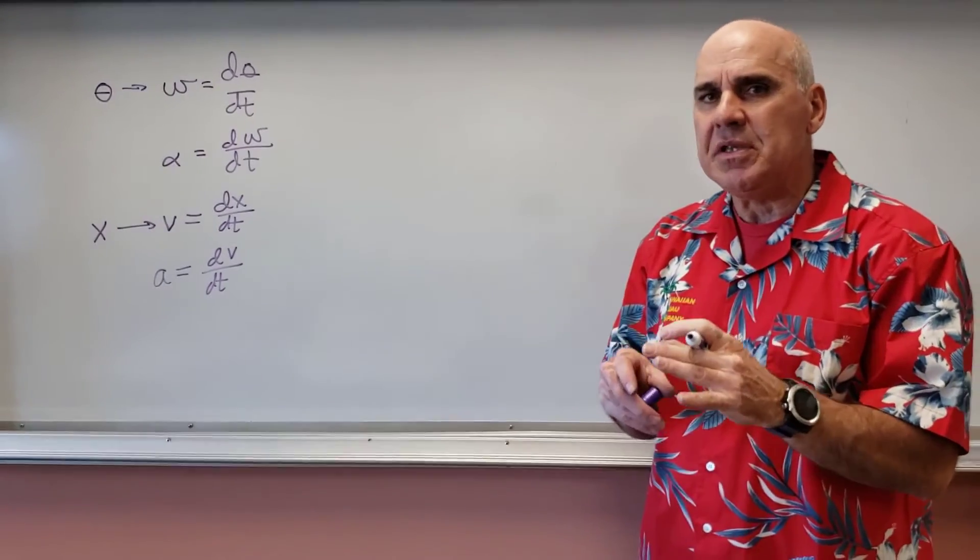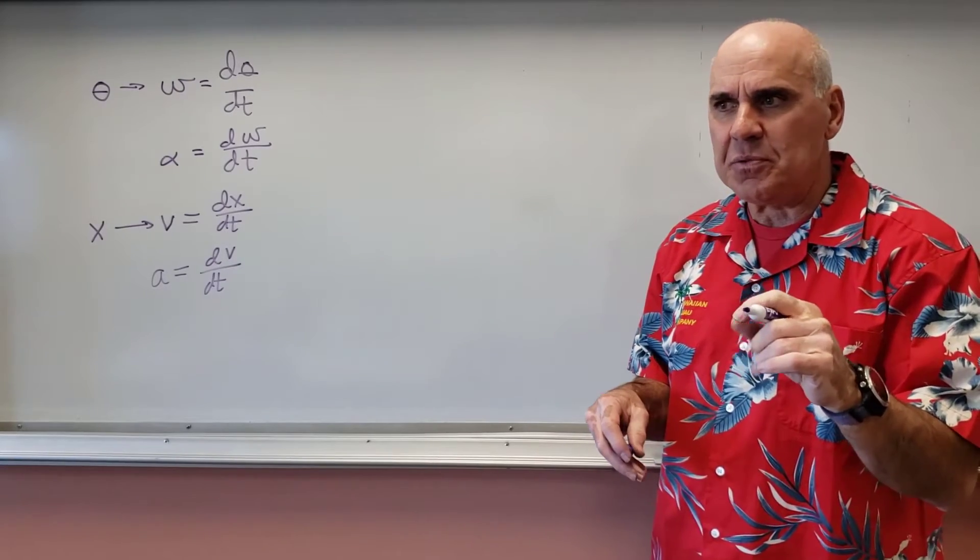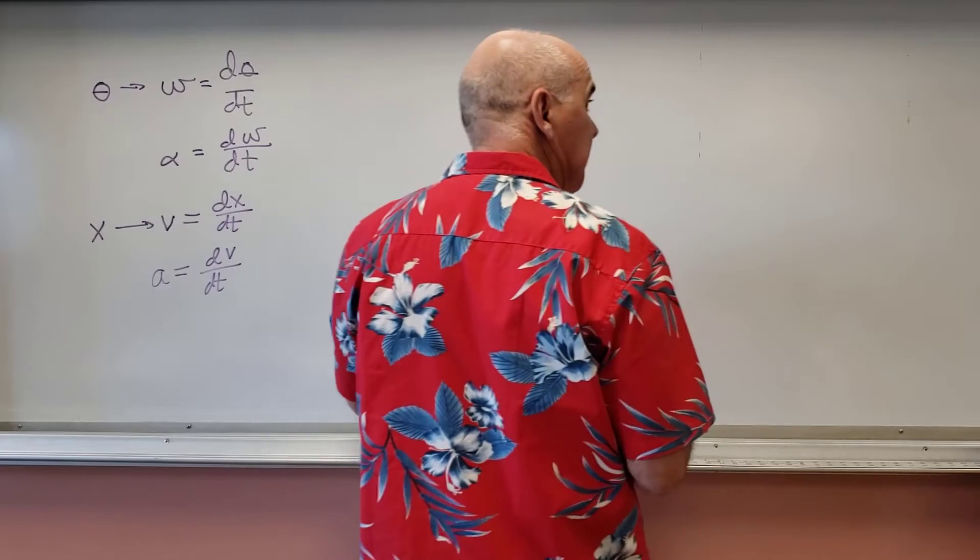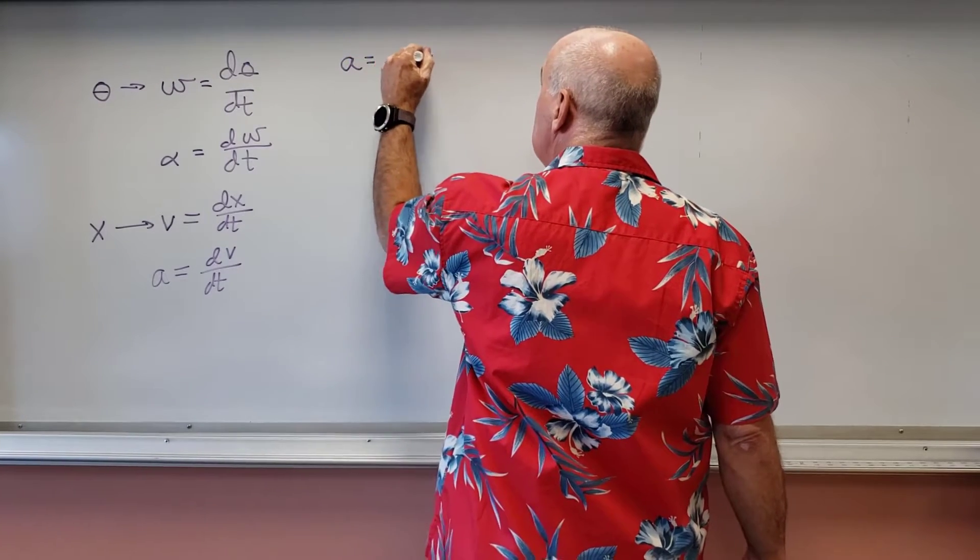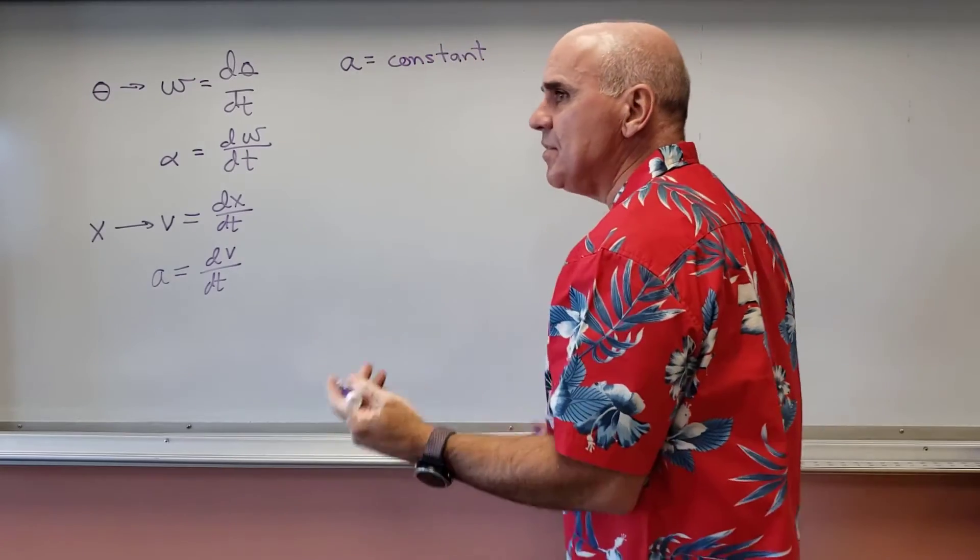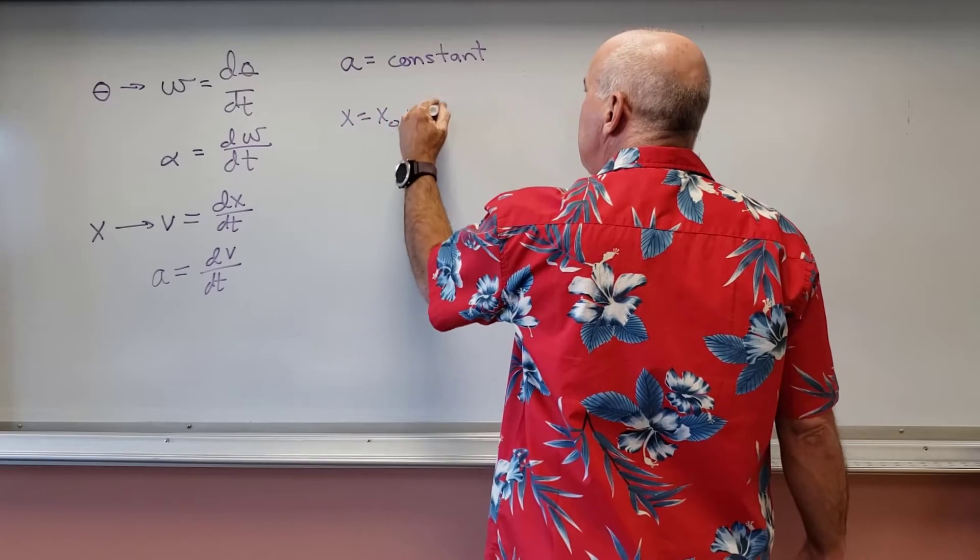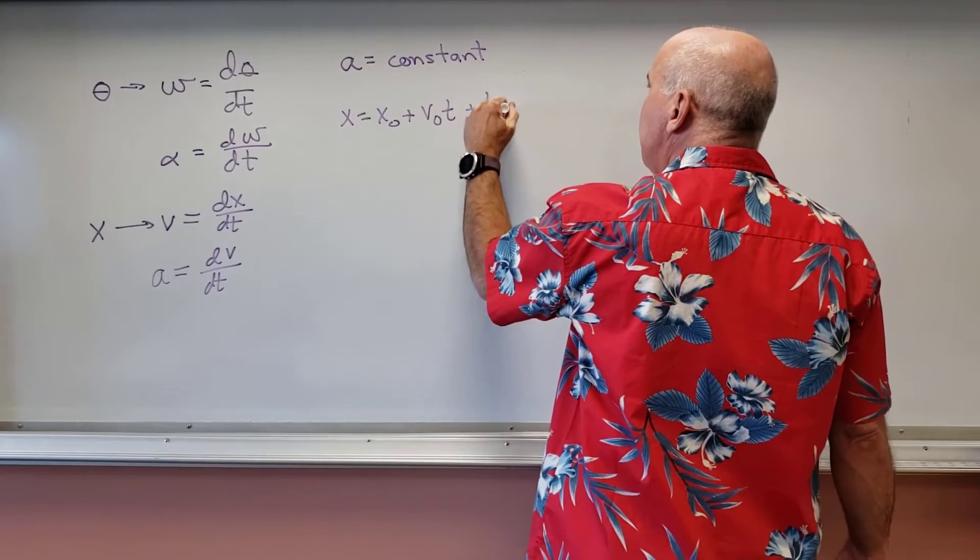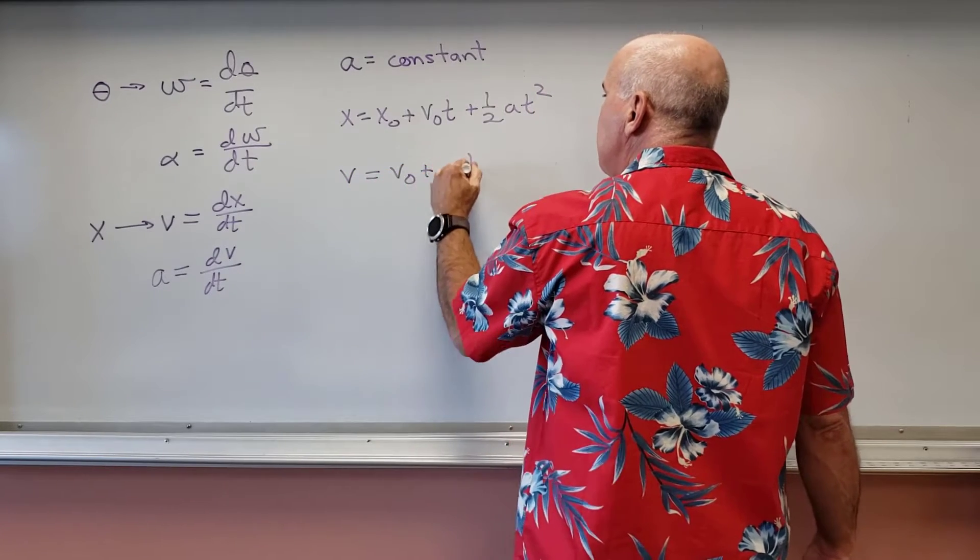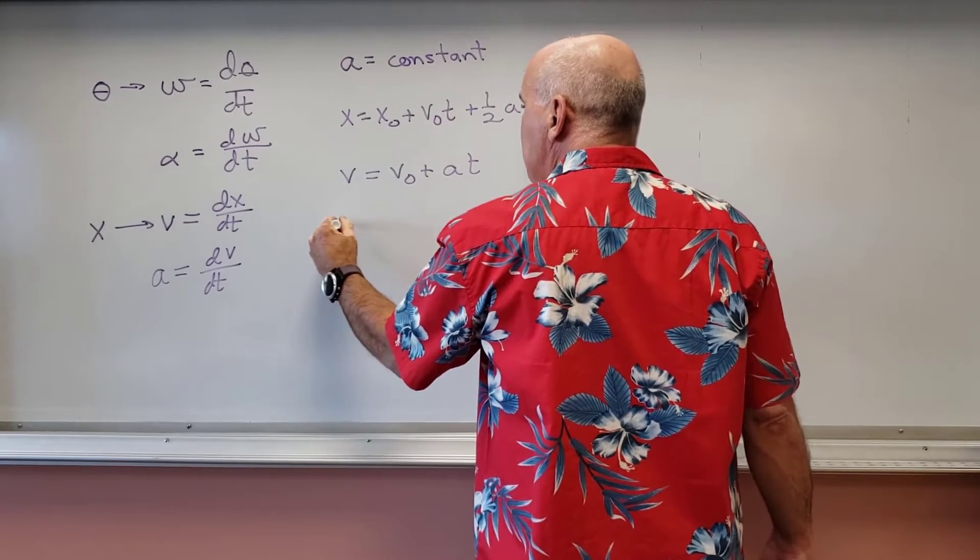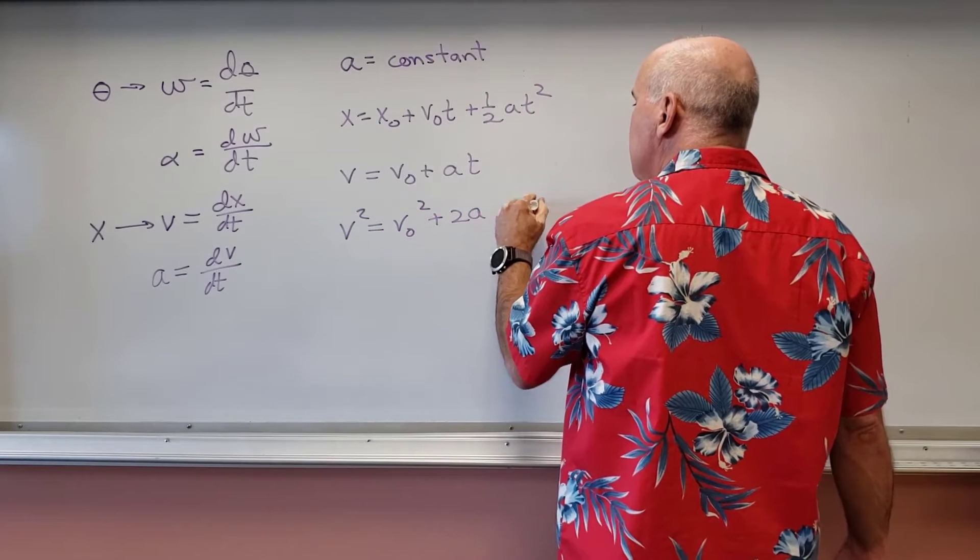And we came out with relationships this way that you might recall. So let's stick with the first ones. The first ones were the kinematic equations, and the kinematic equations assumed that the acceleration was equal to a constant. And then we came out with some equations, and you may recall these. We had x equals x0 plus v0t plus 1 half at squared. We had v is equal to v0 plus at.